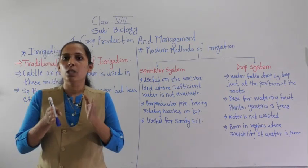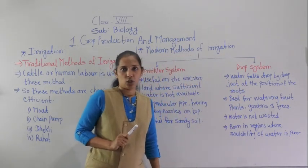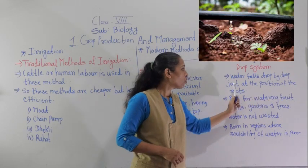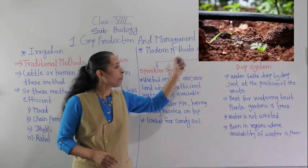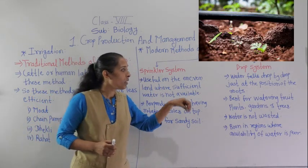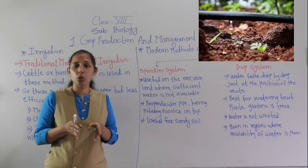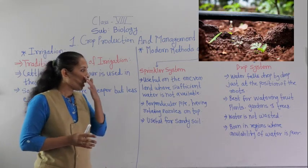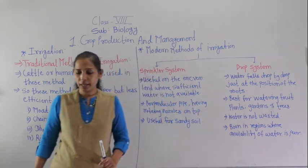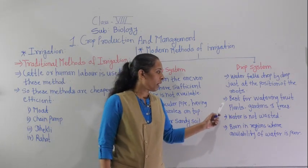For that, the next method is very efficient — drip irrigation, or the drip system. In the drip system, water falls drop by drop just at the position of the root. You can see in the image exactly where the water falls. The water reaches only that position where there is a necessity. This technique is best for watering fruits, plants, gardens, and trees.